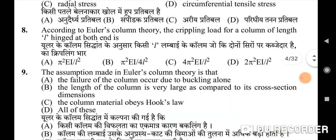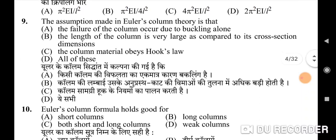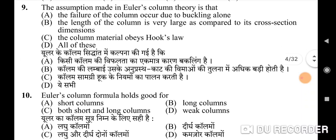Eighth question: according to Euler's column theory, the crippling load for a column of length L hinged at both ends — correct option is A: π²EI upon L². Ninth question: the assumption made in Euler's column theory — correct option is D: all of these.